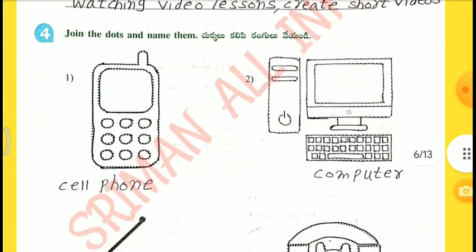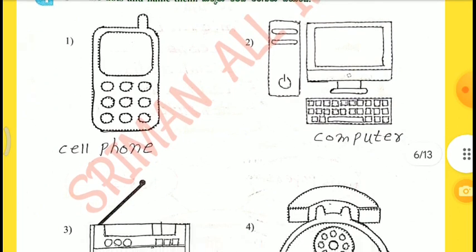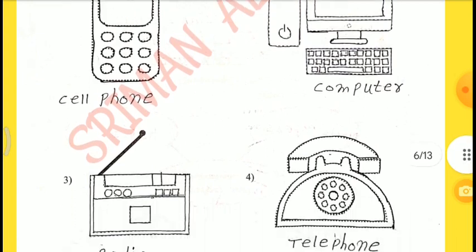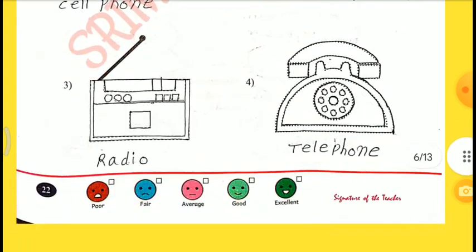4th one — Join the dots and name them. First one is cell phone. Second one is computer. Third one is radio. Fourth one is telephone.